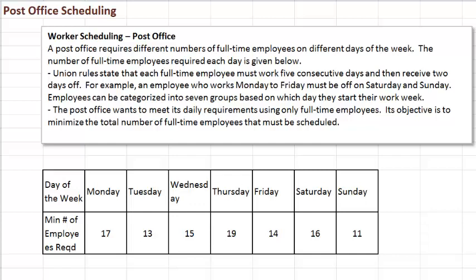Or another employee could start the work week on Tuesday, work Tuesday through Saturday, and then receive Sunday and Monday off. You could have people start on Wednesday and work through Sunday, and then have Monday and Tuesday off. So you could have a variety of these 5-day shifts. Potentially, how many different 5-day shifts can you have? Right — there are 7 days in a week, so there are 7 shifts possible.